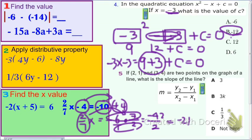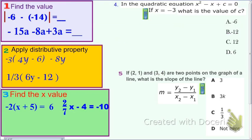And number 5. If (2, 1) and (3, 4) are two points on the graph of a line, what is the slope of the line? This is the standard question. Number 4 and 5, you see slope formula. So you can say X1, Y1, X2, Y2. So you just plug in.